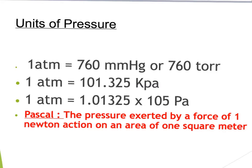When performing gas law calculations, units of pressure come into play. The following are conversions in units of pressure: one atmosphere equals 760 millimeters of mercury; one atmosphere also equals 760 torr, so one millimeter of mercury equals one torr. One atmosphere equals 101.325 kilopascals, or 1.01325 times 10 to the 5th pascals. Pascals are pressure exerted by a force of 1 newton acting on an area of 1 square meter. The most common units of pressure you will see in future problems will be atmosphere and millimeters of mercury.